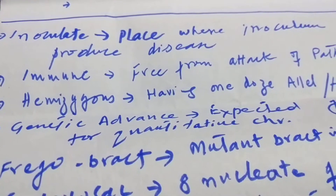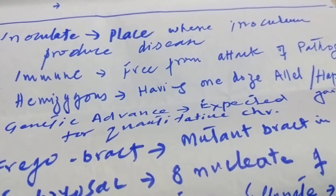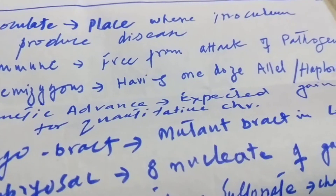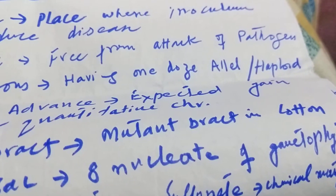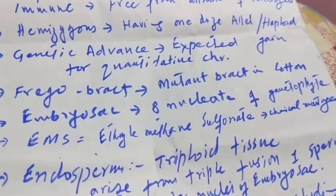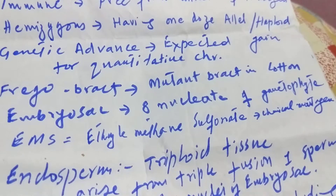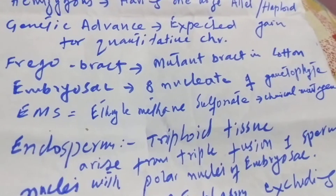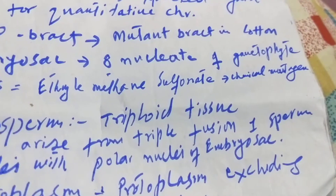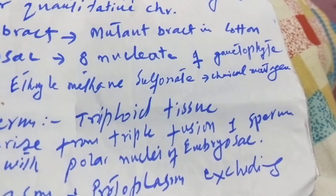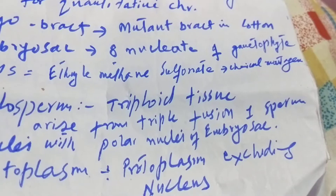Inoculate is the place where inoculum produces a disease. Immune means free from attack of a pathogen. Hemizygous means having one dose of alleles, or haploid. Genetic advance is the expected gain for quantitative characters.